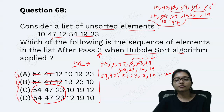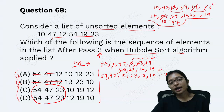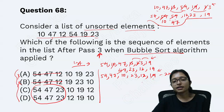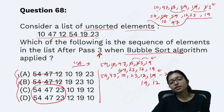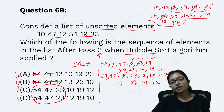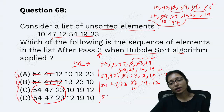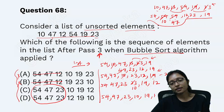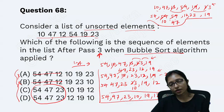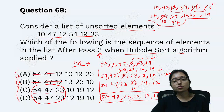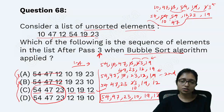Now running the third pass: 19 and 12 — swap, since 19 is greater: 19 then 12. Then 19 and 23: no swap, 23 is larger. Then 23 and 10: swap. 47 stays, 54 stays. Finally, after the third pass you get: 54, 47, 23, 10, 19, 12. That is the answer — you can see it matches the correct option.